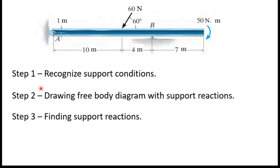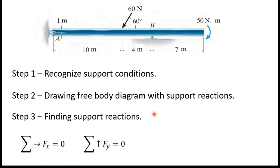That is step two. Step three is finding support reactions. For that we mainly use three relationships: first, we take the sum of all horizontal forces and set it equal to zero; second, we take the sum of all vertical forces and set it equal to zero; finally, we take the sum of moments of the system and set it equal to zero. I will show you how we find support reactions using these relationships.